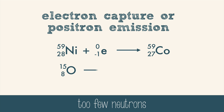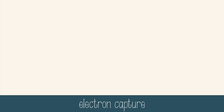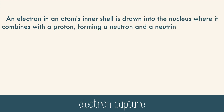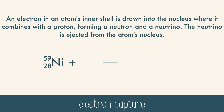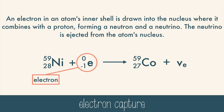Both electron capture and positron emission bring the ratio of protons and neutrons to a more stable place. During electron capture, an electron in an atom's inner shell is drawn into the nucleus, where it combines with a proton, forming a neutron and a neutrino. The neutrino is ejected from the atom's nucleus. Neutrinos have very little mass — much less than even electrons — and have no charge.